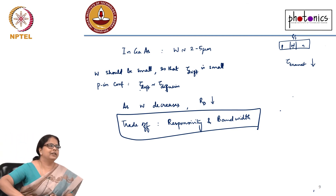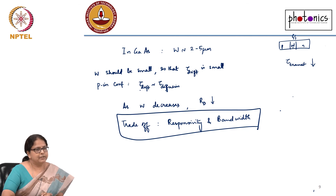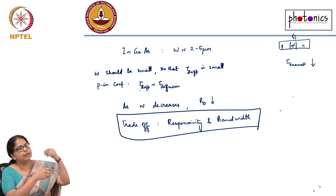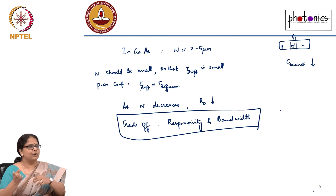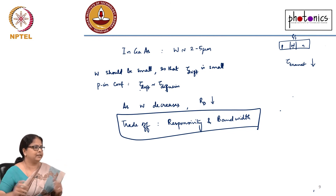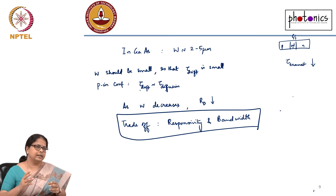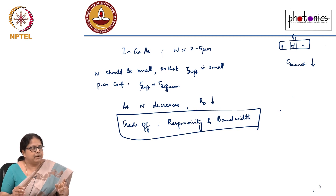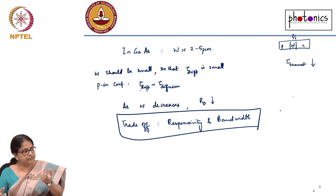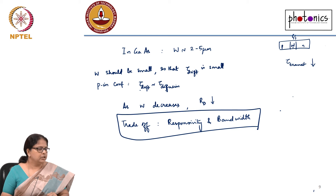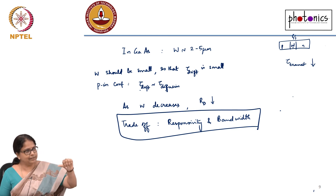For example, if you want a 40 Gbps detector, the transit time must be very small, so the width must be very small, giving poorer responsivity. The responsivity of a 40 Gbps detector versus a 10 Gbps versus a 1 Gbps detector will show different numbers because the device design itself is different. So whenever we talk about responsivity, we cannot universally say it is 0.8 or 1.0 — it depends on bandwidth and wavelength. You have to look at the datasheet carefully to find what responsivity is specified at what bandwidth.